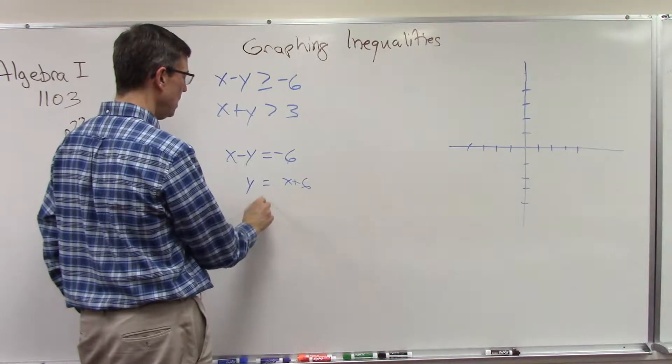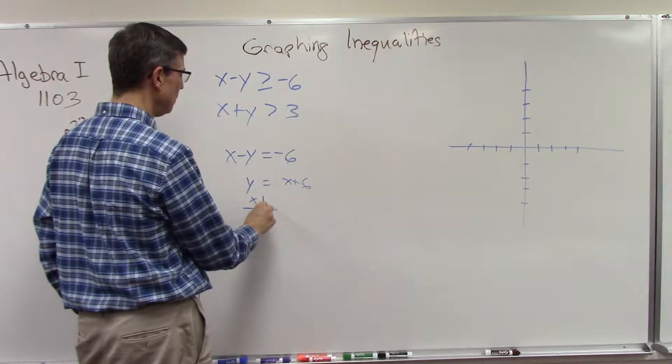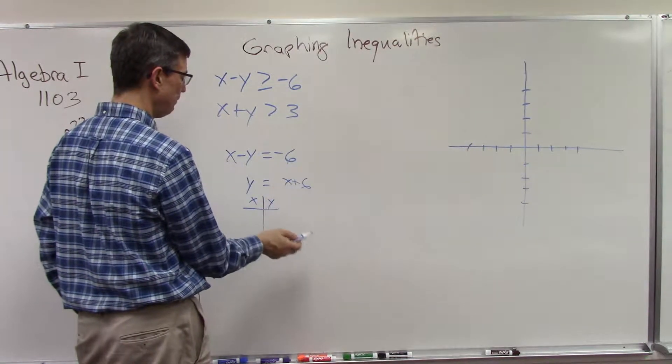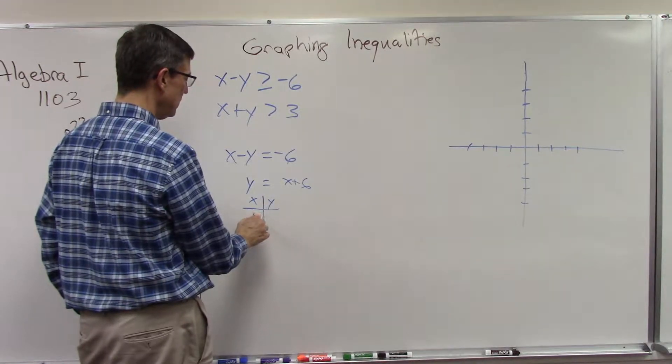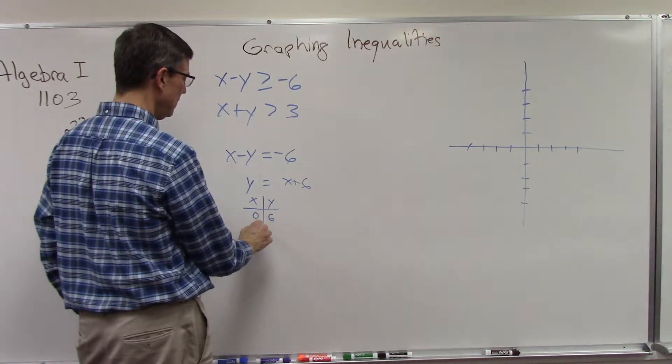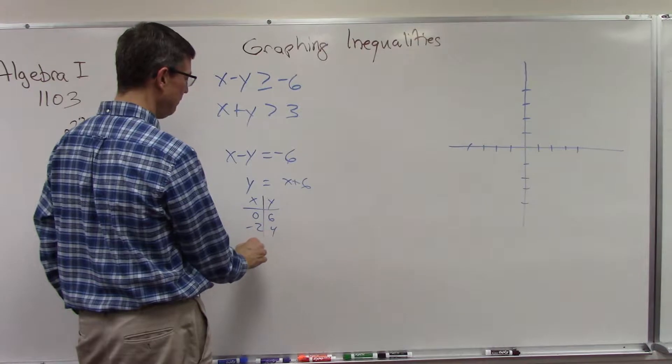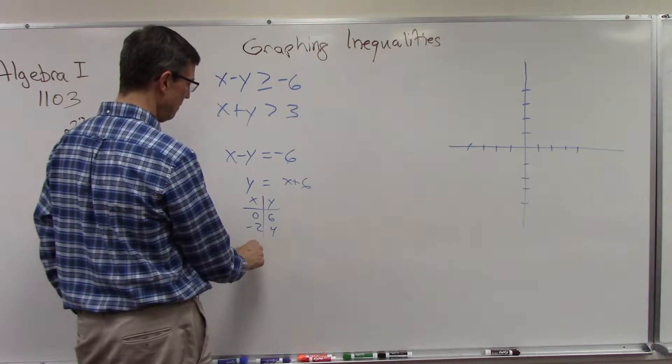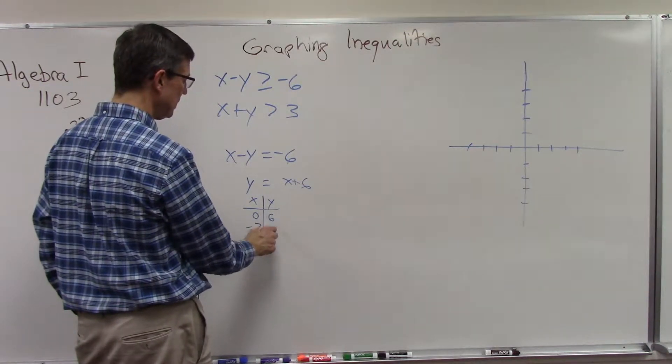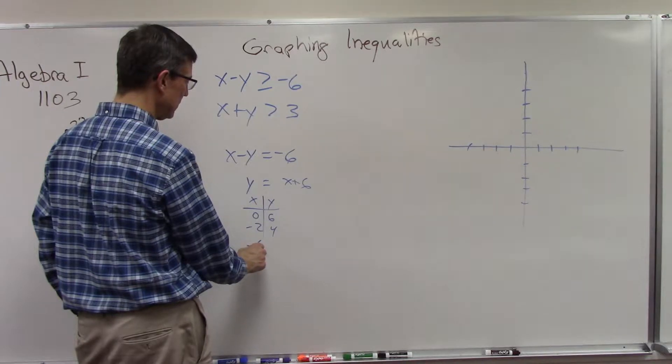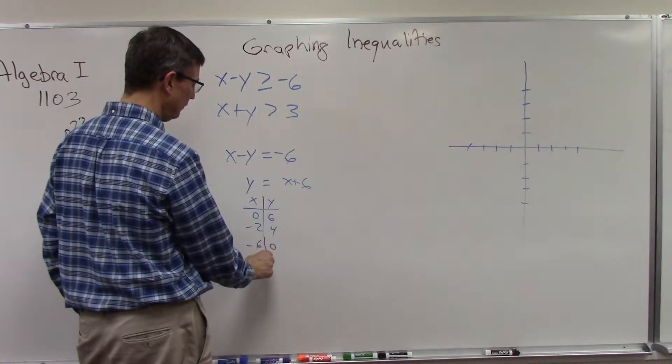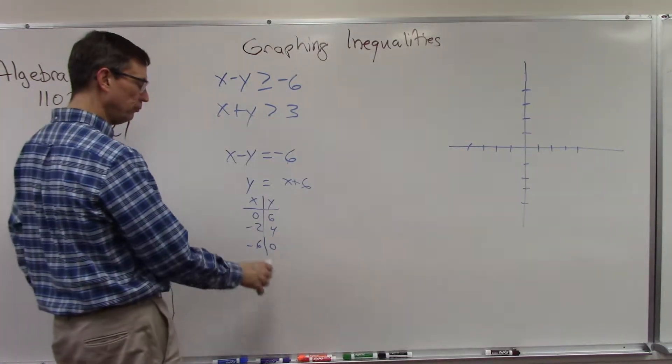Then set up a table of values, plug in for x, solve for y. So if I plug in zero I get six, plug in negative two I get four. I'm going to plug in negative six and get zero.